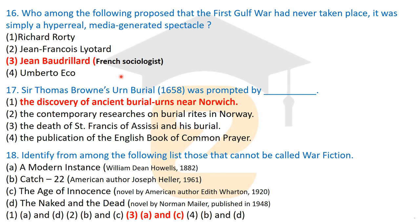Question seventeen: Sir Thomas Browne's 'Urn Burial,' published in 1658, was prompted by what? The answer is the discovery of ancient burial urns near Norwich. This work was related to the discovery of an ancient burial place near Norwich.